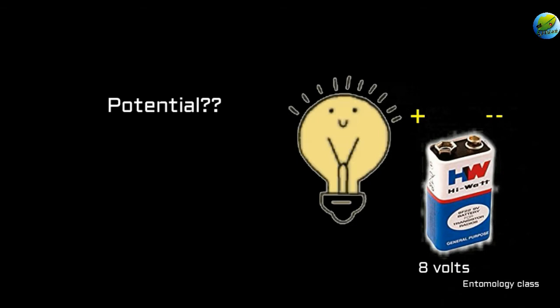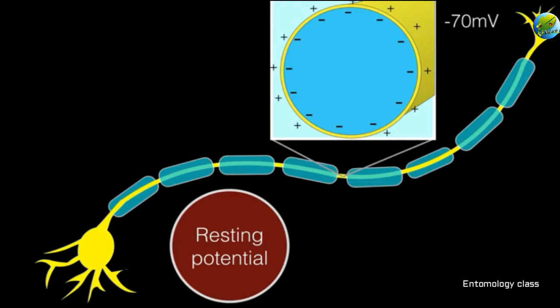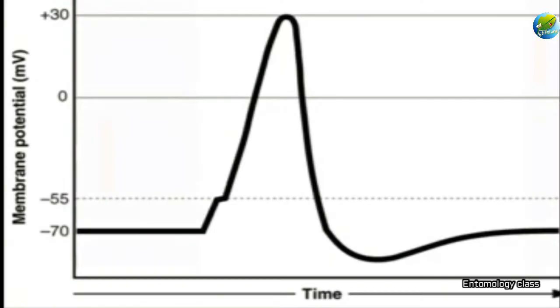What is potential? Potential in physics means there is a separation of two charges. Take a battery of 8V for example — it has potential, meaning there is a separation of charge within the battery itself. It also means it has potential to do work when the charges come in contact with each other. Now, let's take a neuron cross section. There is also resting potential, meaning there is a separation of charges across the membrane on the surface of the neuron. When we measure it, it is around minus 70 millivolts.